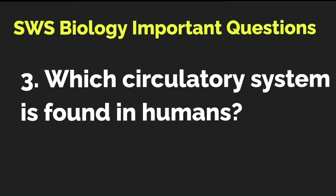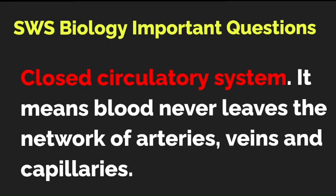I hope you are finding this quiz useful. Which circulatory system is found in human beings? The correct answer is the closed circulatory system. It means the blood never leaves the network of arteries, veins, and capillaries.